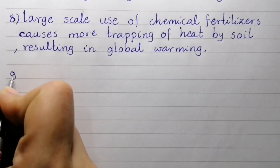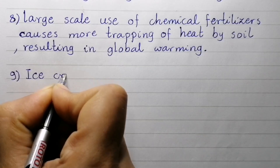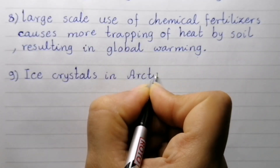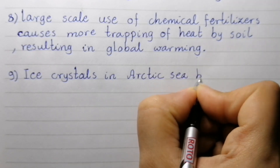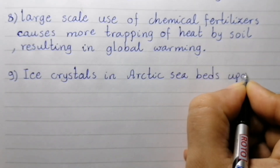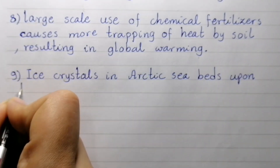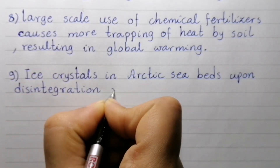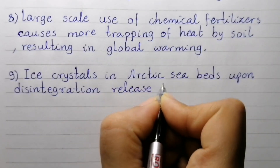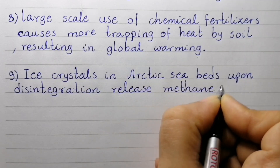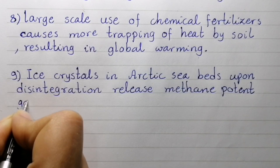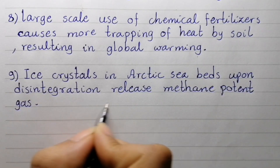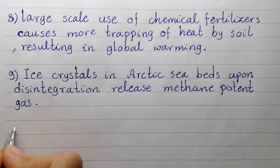Point number nine: ice crystals in Arctic seabeds, upon disintegration, release methane, a potent greenhouse gas.